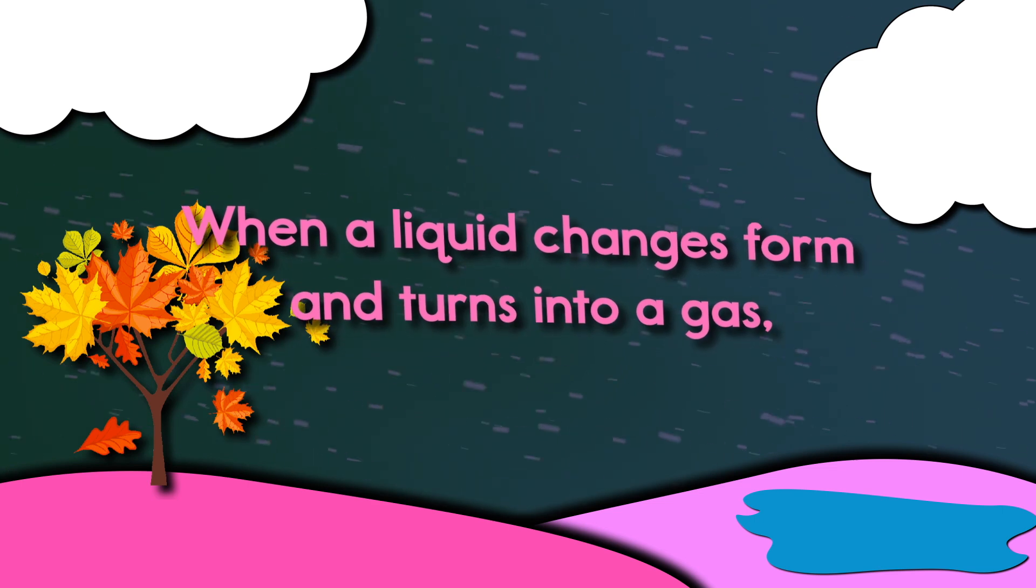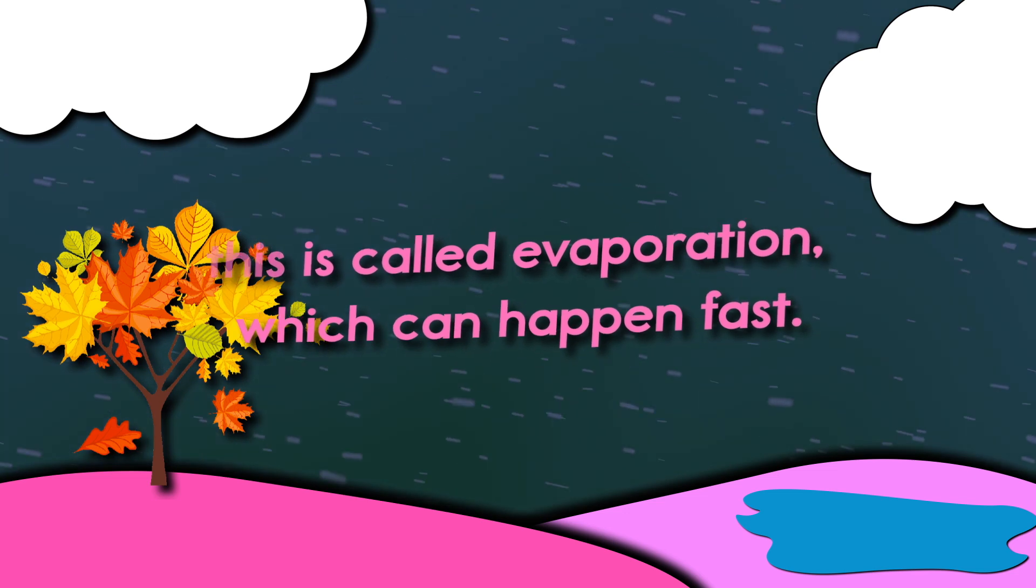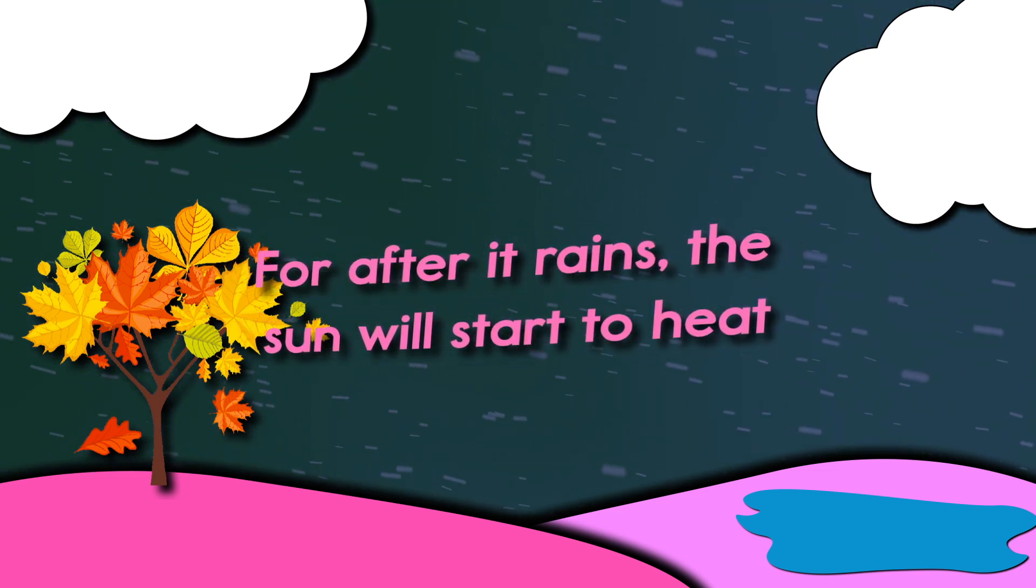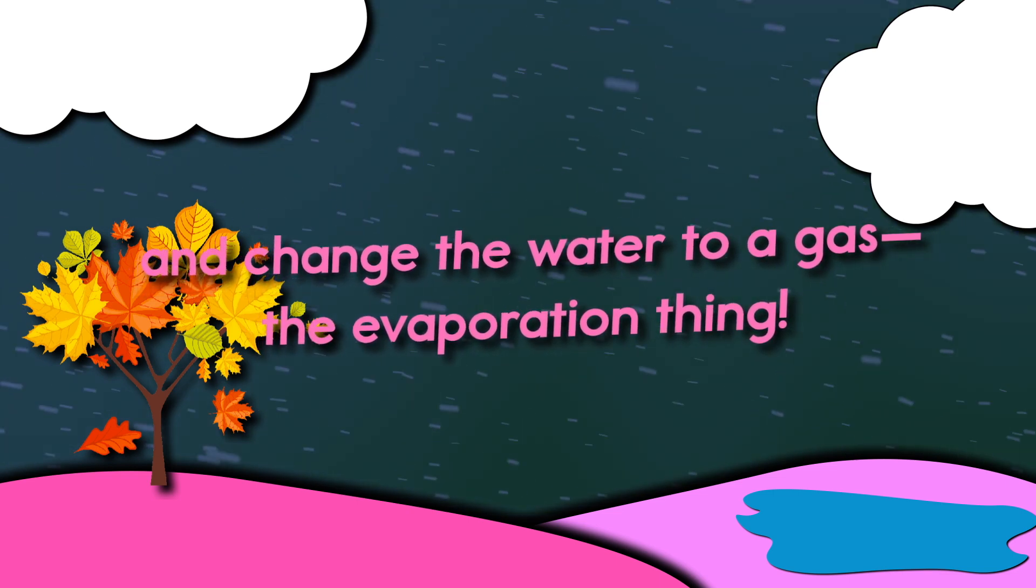When a liquid changes form and turns into a gas, this is called evaporation, which can happen fast. For after it rains, the sun will start to heat and change the water to a gas, the evaporation thing.